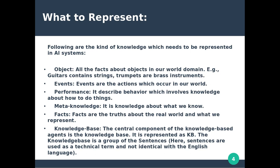The first type of knowledge is objects — all the facts about objects in our world domain. All objects are different, so the facts are different. For example, a guitar contains strings, trumpets are brass instruments.